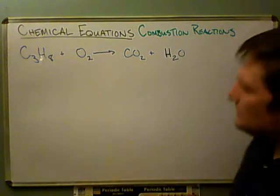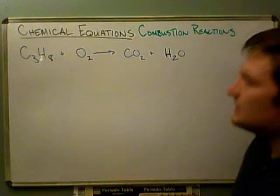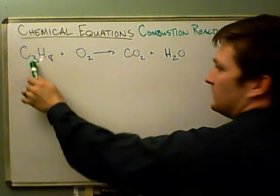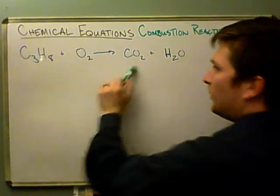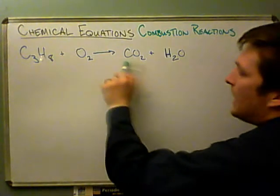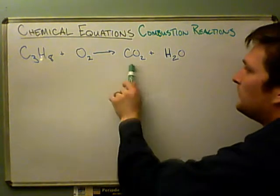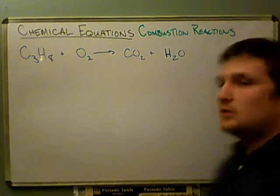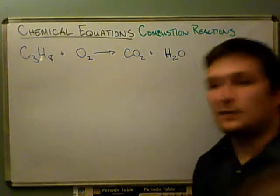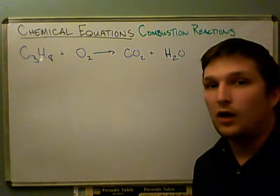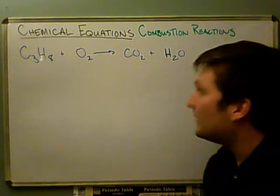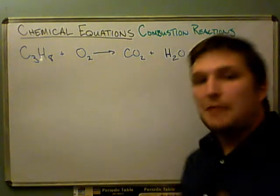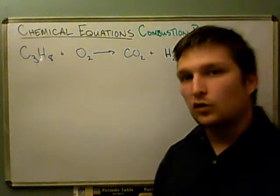But now we can see that this equation isn't balanced, because on the left side we have three carbons, but on the right side we only have one. Those three didn't just disappear — they have to be accounted for. That's all part of balancing the chemical equation.